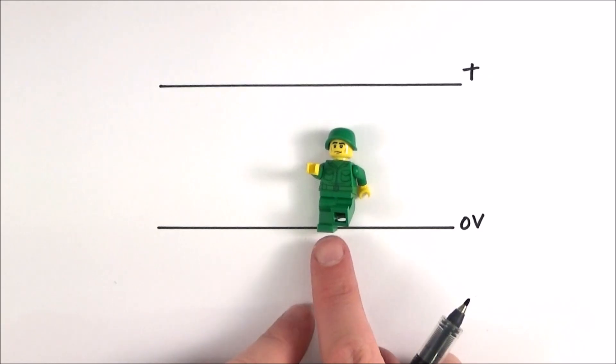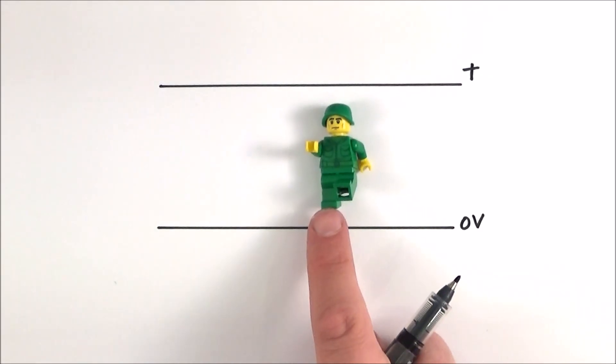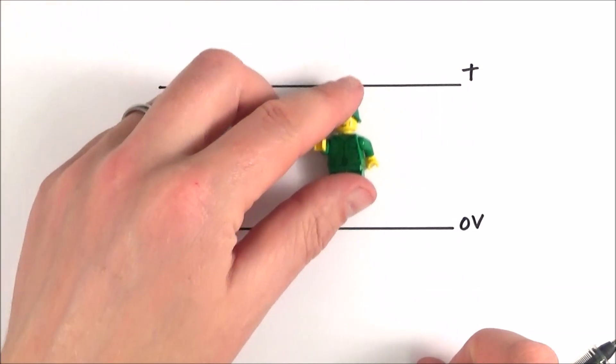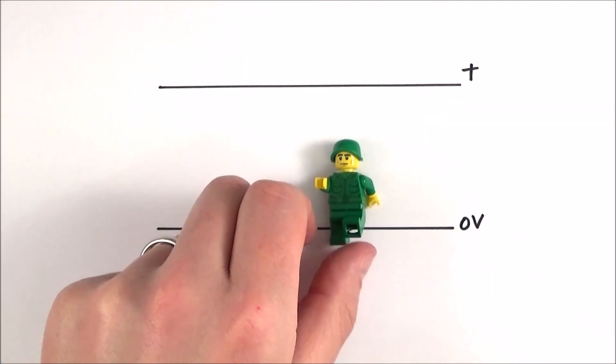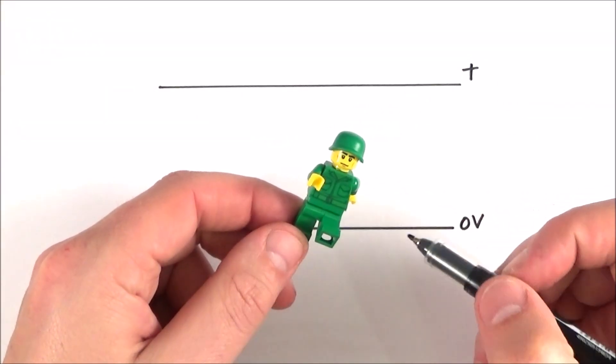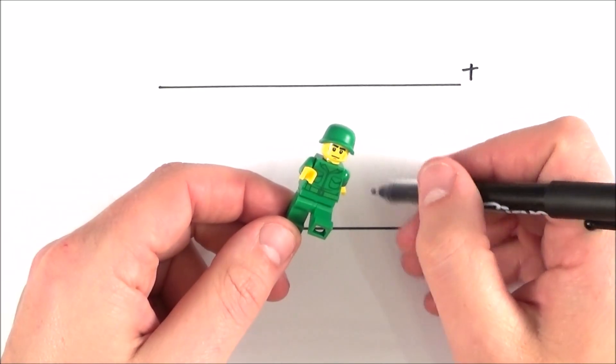Now in order to move it up what I have to do is I have to do work on this over a certain distance because it doesn't want to be moving this way. As soon as I take my finger away it's going to move back down to where it was before and what we can look at is the amount of work that I do per unit charge to move this in this electric field.